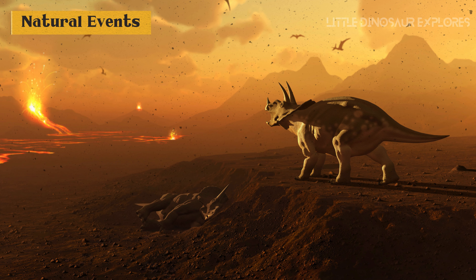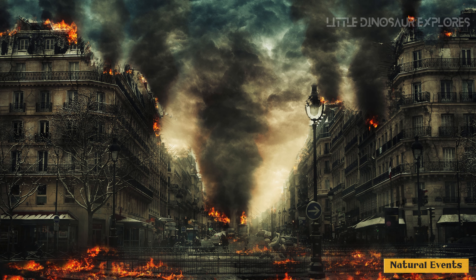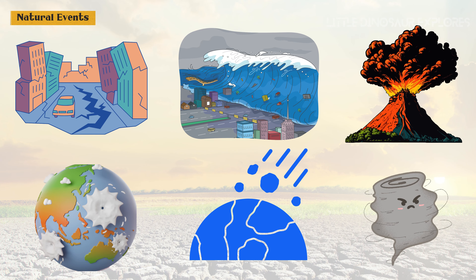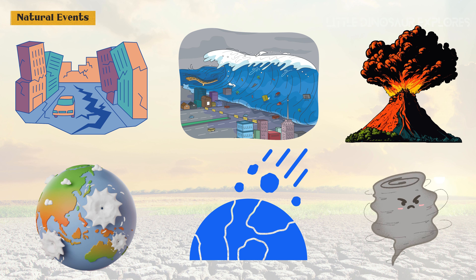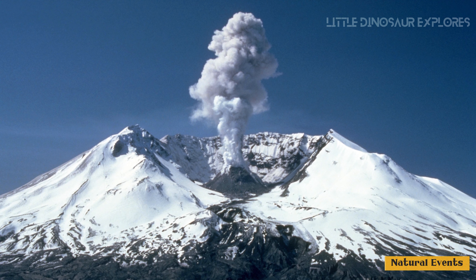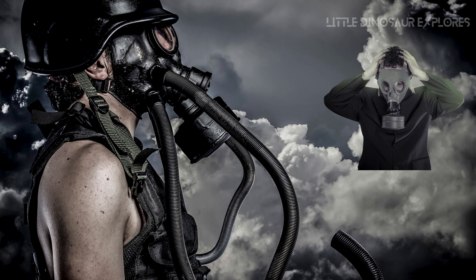7. Natural events. Extinctions can also occur due to natural events such as volcanic eruptions, earthquakes, hurricanes, tsunamis, and asteroid impacts. These catastrophic events can cause widespread destruction of habitats and ecosystems, leading to mass extinctions of species over short geological time scales.